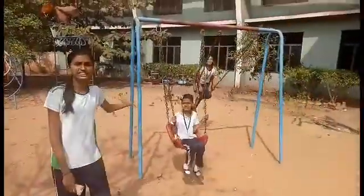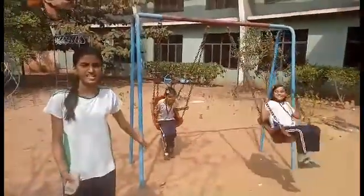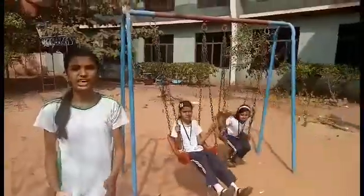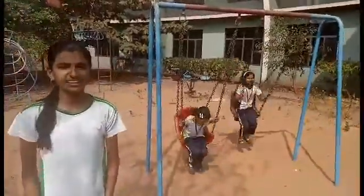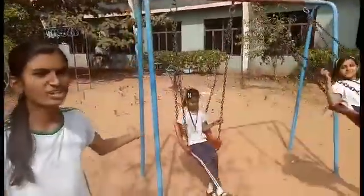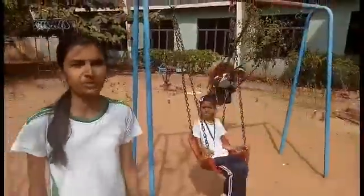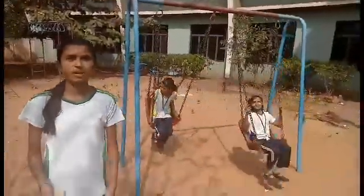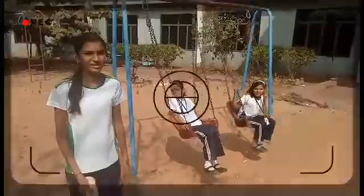See friends, what the girls are doing — you are exactly right, they are playing on the swing. The swing is an example of oscillatory motion.